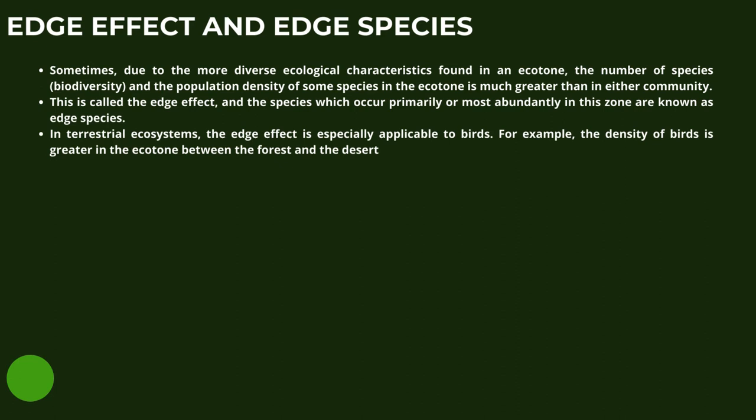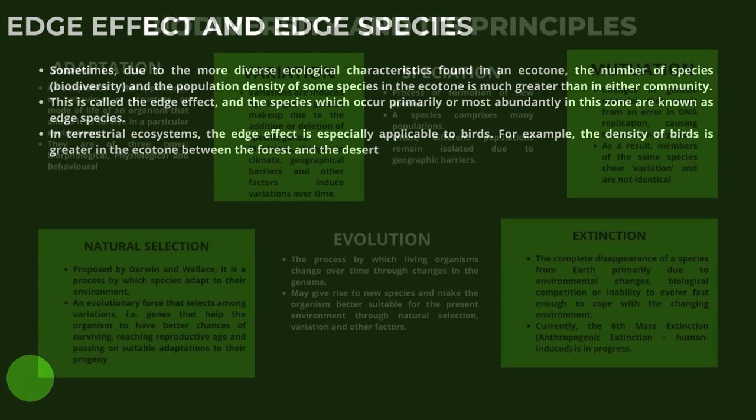Now let us look at edge effect and its species. Sometimes, due to the more diverse ecological characteristics found in an ecotone, the number of species, biodiversity, and the population density of some species in the ecotone is much greater than in either community. This is called the edge effect, and the species which occur primarily or most abundantly in this zone are known as edge species. In terrestrial ecosystems, the edge effect is especially applicable to birds — for example, the density of birds is greater in the ecotone between the forest and the desert.